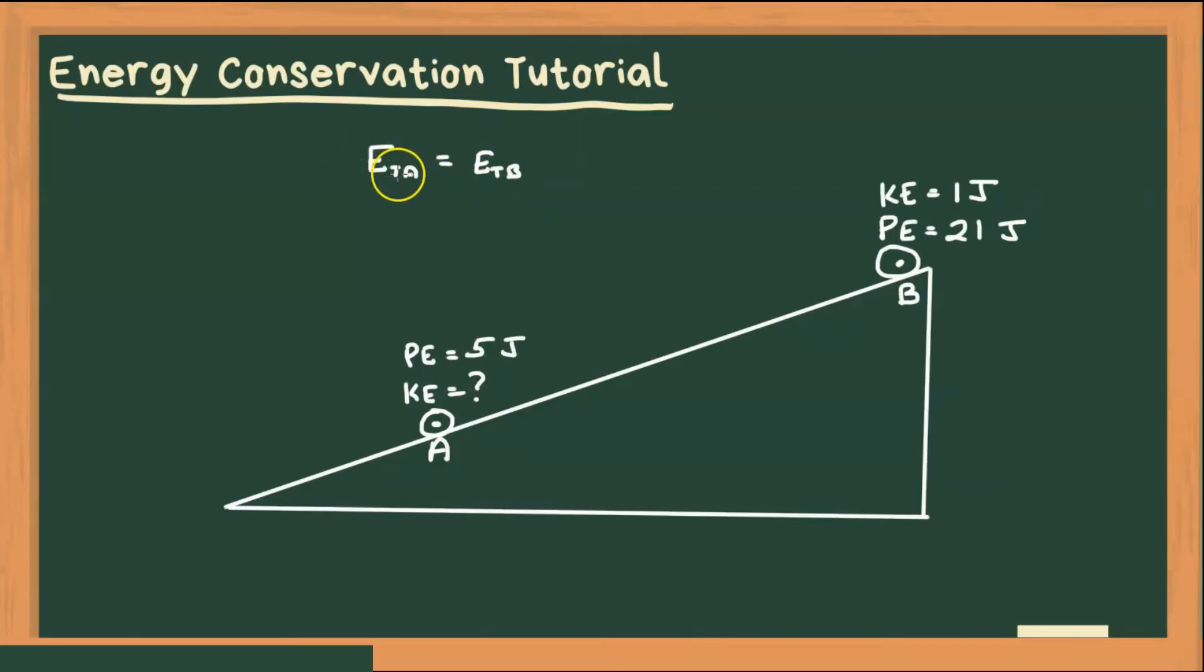Well, our total energy at A is the sum of our kinetic energy at A, plus our gravitational energy at A. And that's going to equal our total energy at B, which is again the sum of our kinetic energies at B, plus our gravitational potential energies at B.